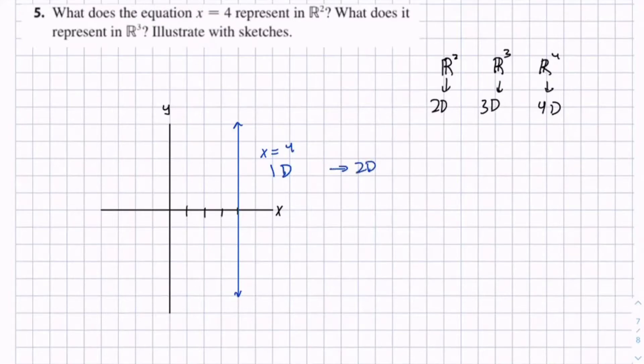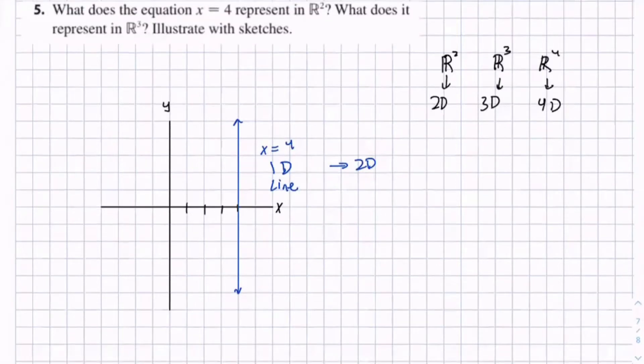And in 1D, x equals 4 is a line. And in 2D, it's going to become a plane. And we're going to see why that happens.